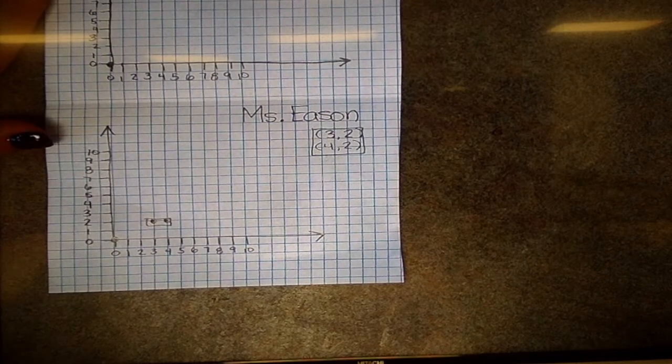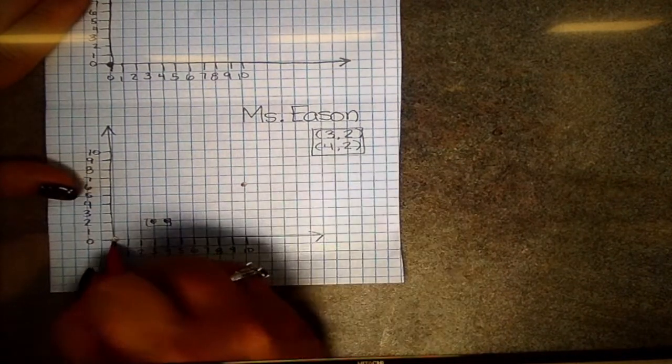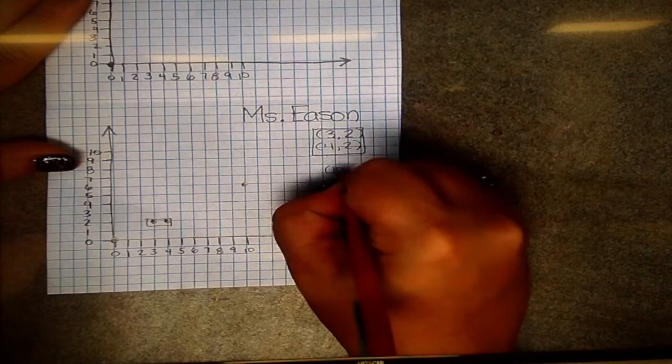Next, you're going to make a boat that has three points, a boat that has four points, and a boat that has five points. Make sure you write the ordered pairs over to the side.